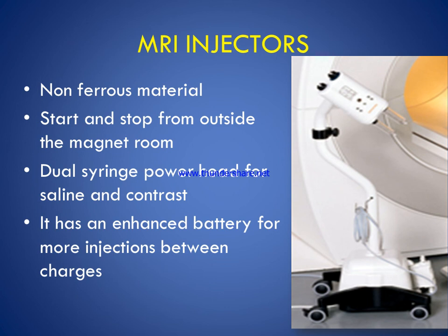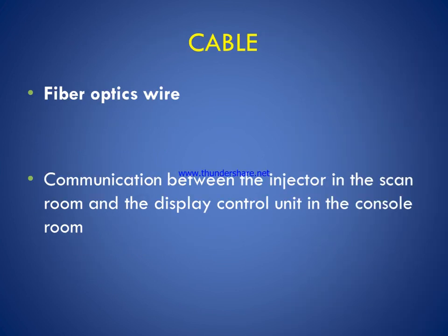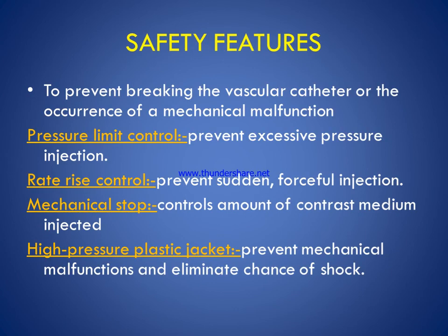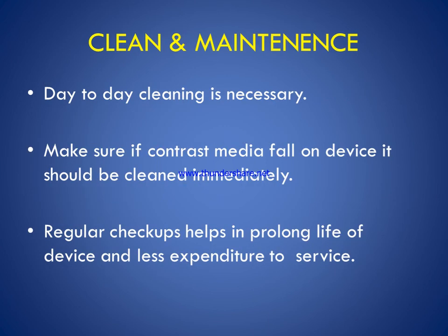For the MRI injector, the device is made of non-ferrous material and can be started or stopped from outside the magnet room. It has a dual syringe power head for saline and contrast, and an enhanced battery for use between charges. The cable used in the MRI pressure injector is made of fiber optic wire, providing communication between the injector in the scan room and the display control in the console room.